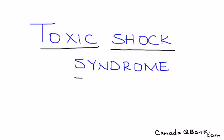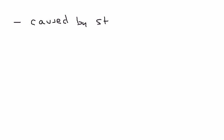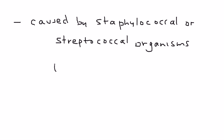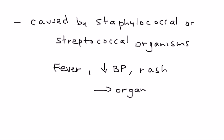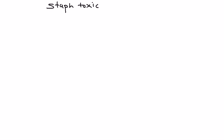Toxic Shock Syndrome, or TSS, is caused by Staphylococcus or Streptococcus. These organisms cause a syndrome that consists of fever, low blood pressure, a rash, and if severe enough, can go on to cause organ failure involving the kidneys and liver. We can break it into two categories: Staph Toxic Shock and Strep Toxic Shock.